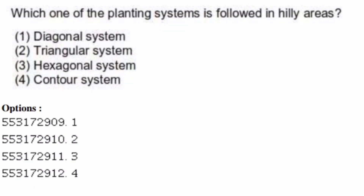Which planting system is followed in hilly areas? Options are: diagonal system, triangular system, hexagonal system, contour system. The right answer is option four, contour system.